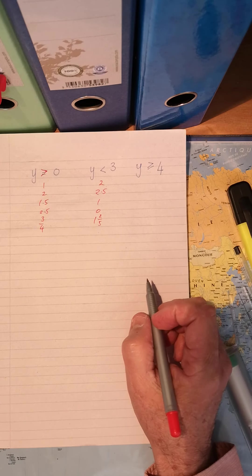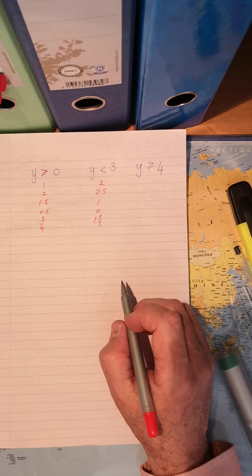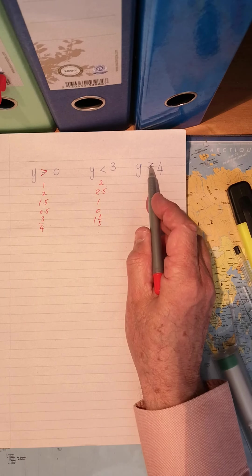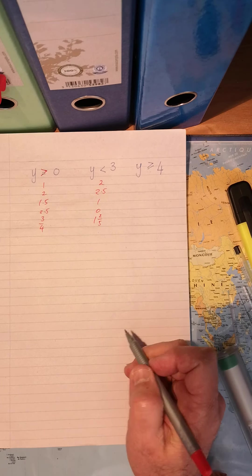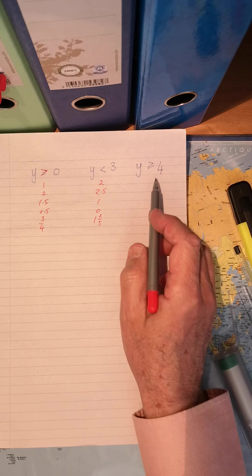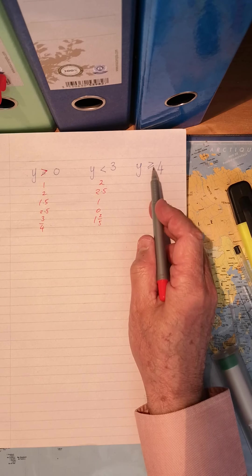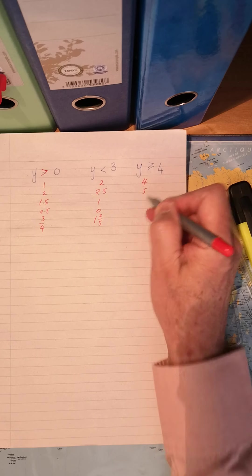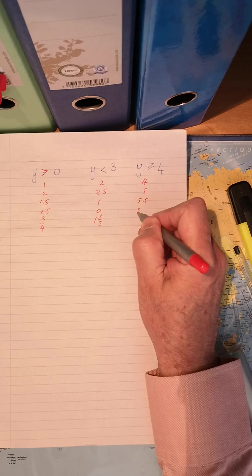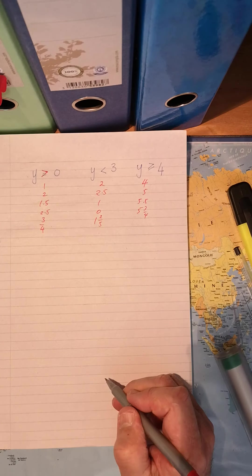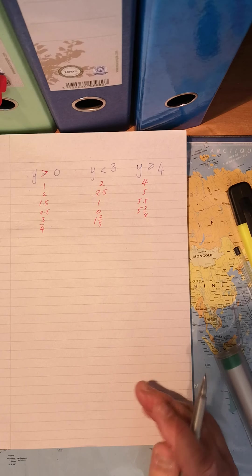Y is bigger than or equal to four. Y is bigger than or equal to four. All right. So in this case, it's got to be a larger number and equal to four. So we can start with four, five, five and a half, five and three quarters, and so on. Okay. Do we understand that?